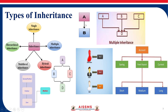Now we will see examples. For single inheritance, we have the animal and dog example. For multiple inheritance, we can say parents and child. For multi-level inheritance, we have grandfather, father, and child — that is multi-level.